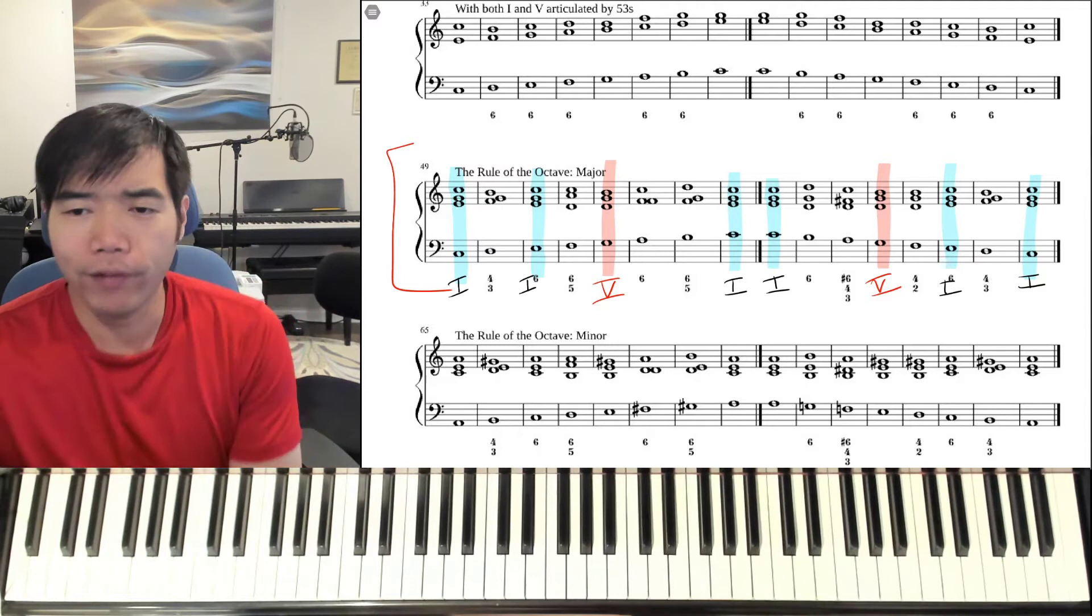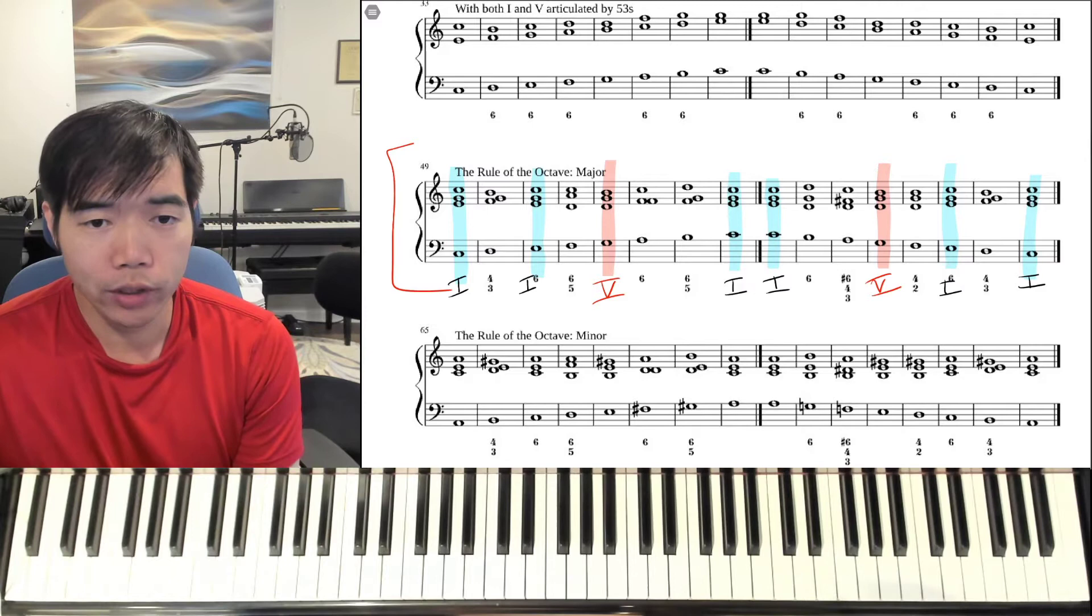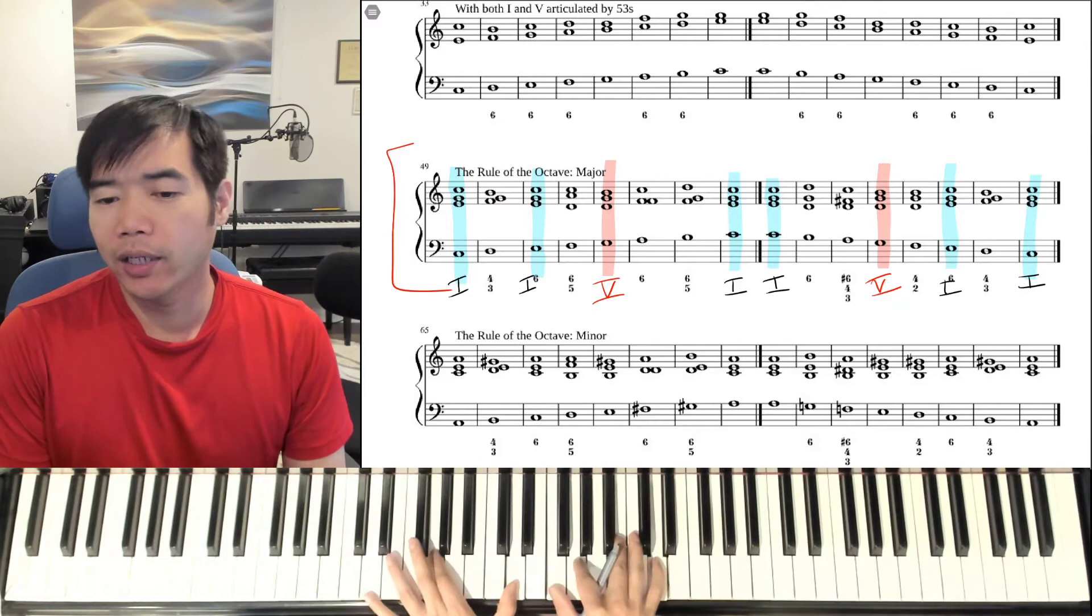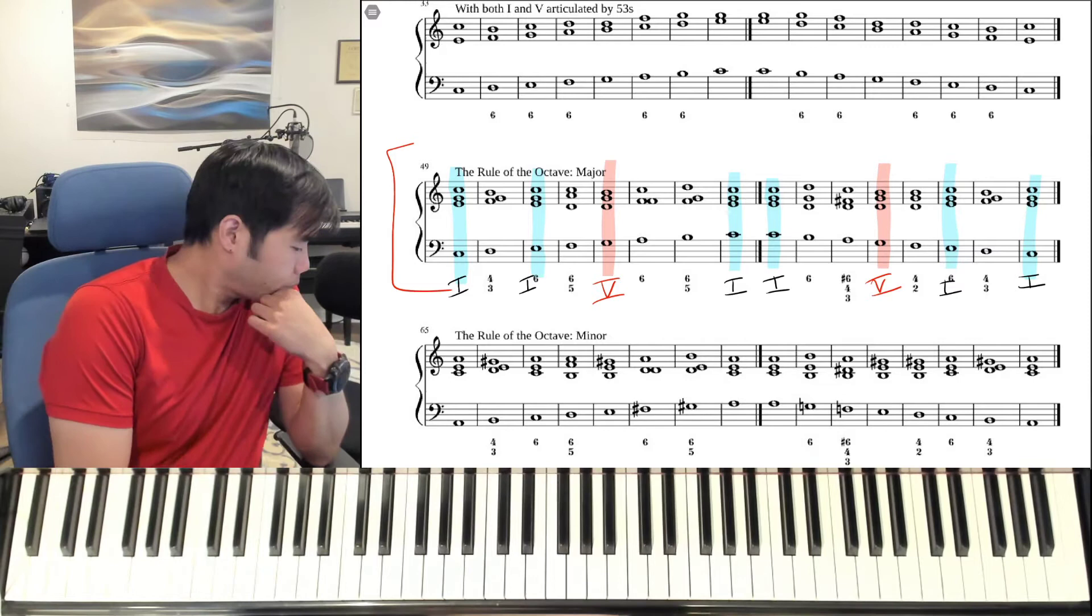Now, the next thing to think about is, where does V want to go? Well, V wants to go to I. V wants to go to I, because V wants to resolve to I. Dominant to tonic, or dominant to tonic, many ways you can voice this.